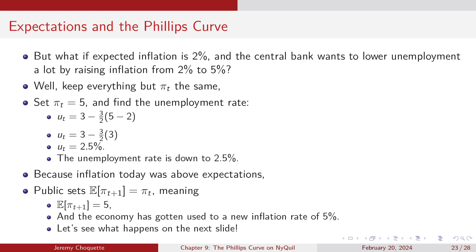But because inflation was above expectations today, that's now useful information for the public when setting expected inflation tomorrow. Using all available information, they update: inflation was 5%, it's probably still going to be 5%. So they update their expectations to 5%, and the economy gets used to a new inflation rate of 5%.